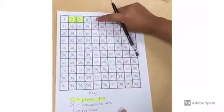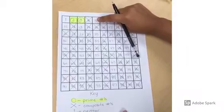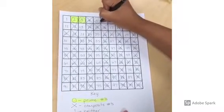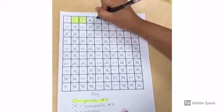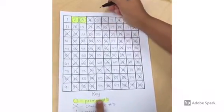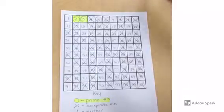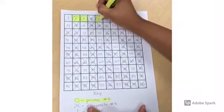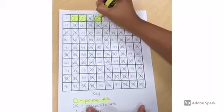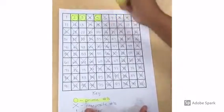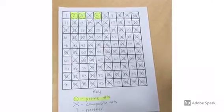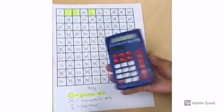The next prime number you circle is five. You can highlight now or at the very end. To find the multiples of five, you can use a calculator.